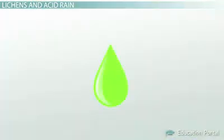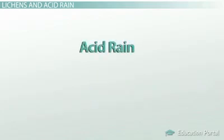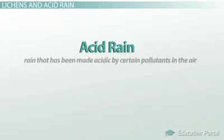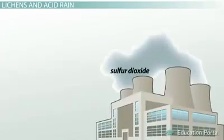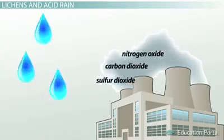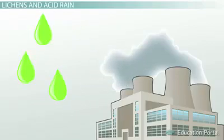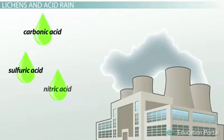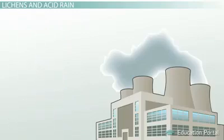So we see that lichens break down rock by producing acid, and we see a similar phenomenon with acid rain. The EPA defines acid rain as rain that has been made acidic by certain pollutants in the air. When pollutants such as sulfur dioxide, carbon dioxide, and nitrogen oxide are produced by activity such as burning fossil fuels, these pollutants are put into the air where they mix with moisture. This process produces acids such as sulfuric acid, carbonic acid, and nitric acid, which falls to the ground as acid rain and chemically weathers rocks.